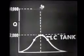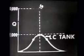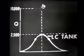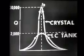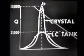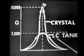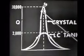The Q of the crystal circuit is many times greater than that of the LC circuit. The Q of an LC tank circuit is seldom greater than 2,000, whereas the Q of the crystal is sometimes as great as 30,000. Because of this high Q, the crystal has much better frequency stability.